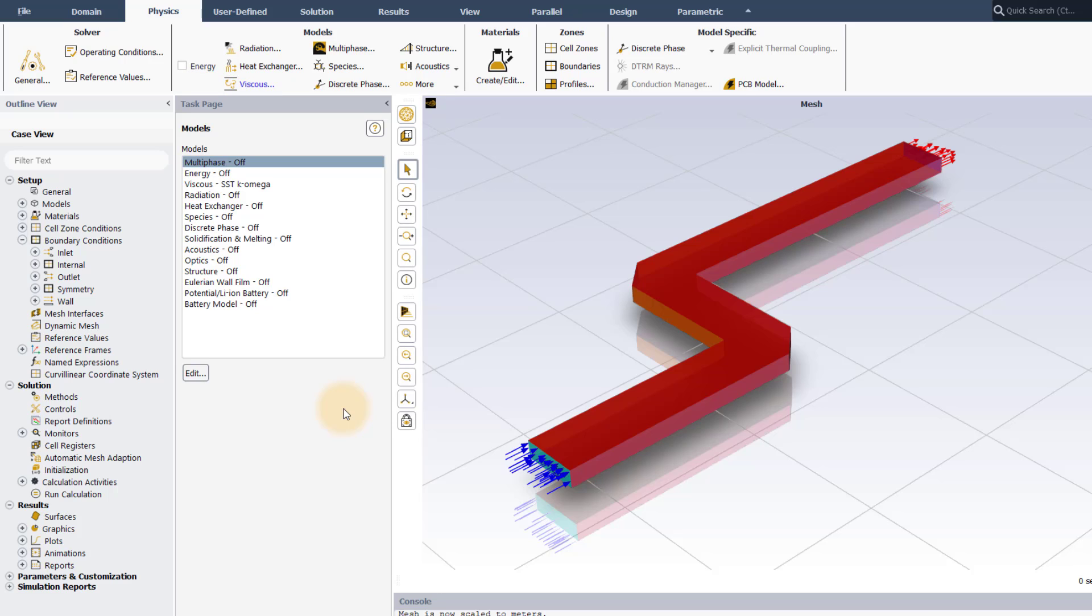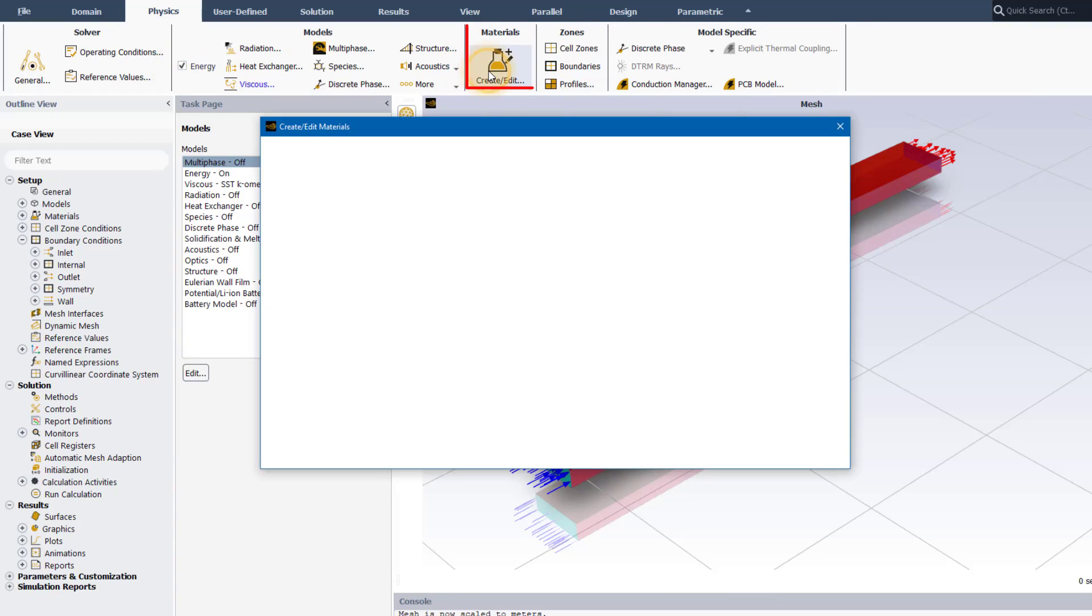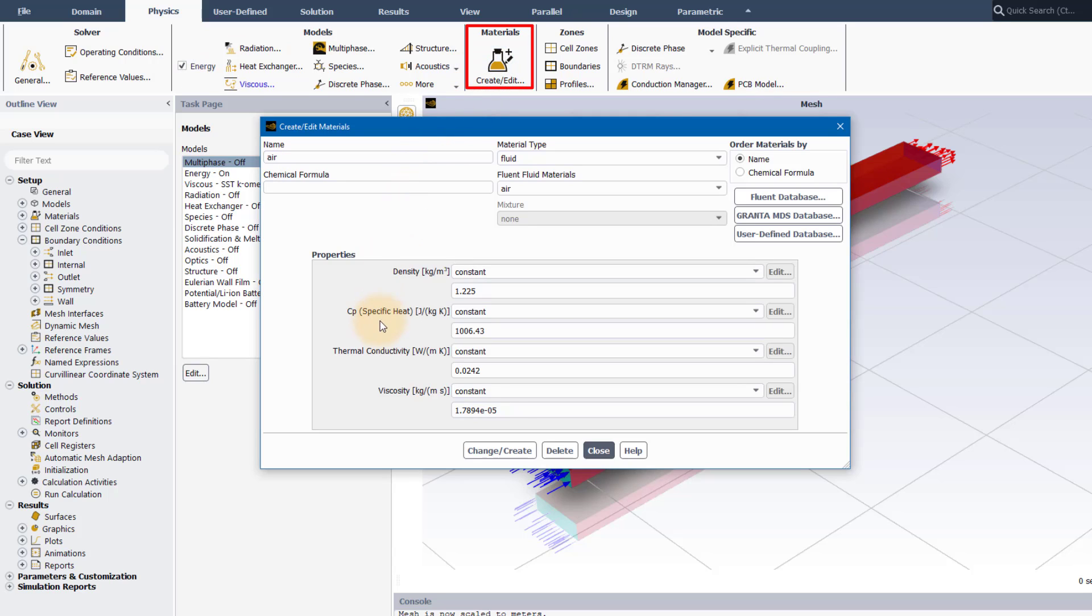If you need to include heat transfer in your simulation, this is easy. Just click energy in the ribbon. This will force ANSYS Fluent to also solve the conservation of energy equation. Ensure that you go to the materials panel and define material properties like thermal conductivity and specific heat for all the solids and fluids included in your simulation so that the calculation of the heat transfer is correct.